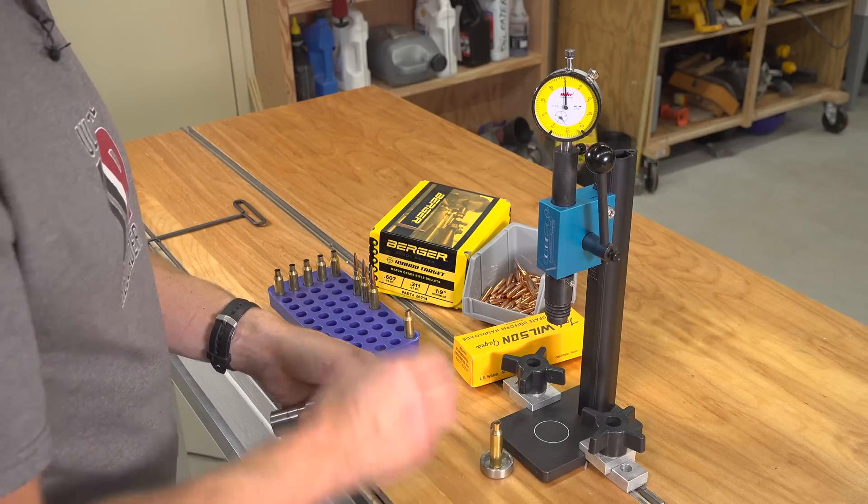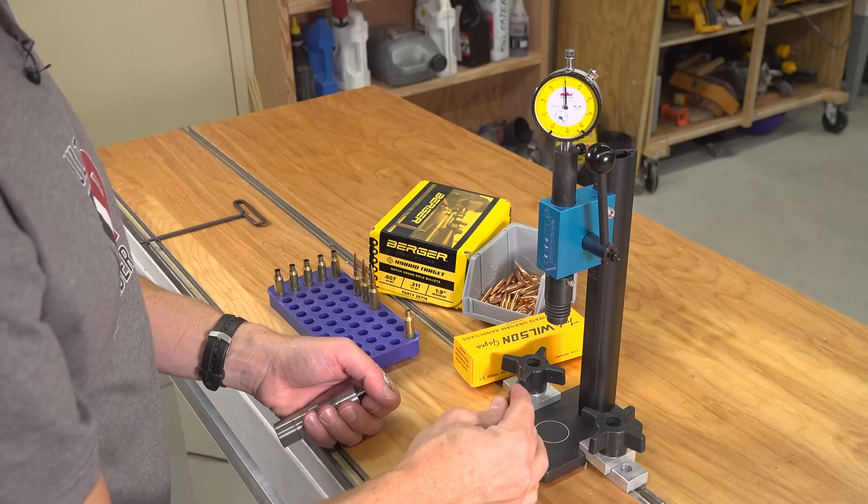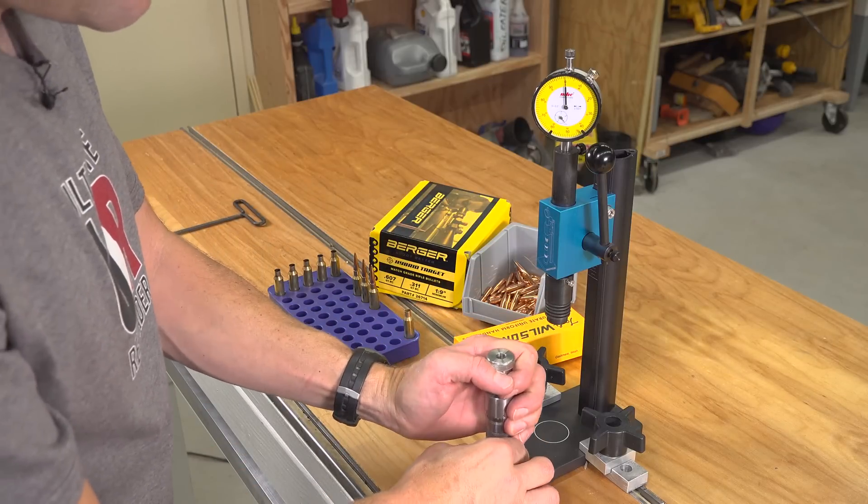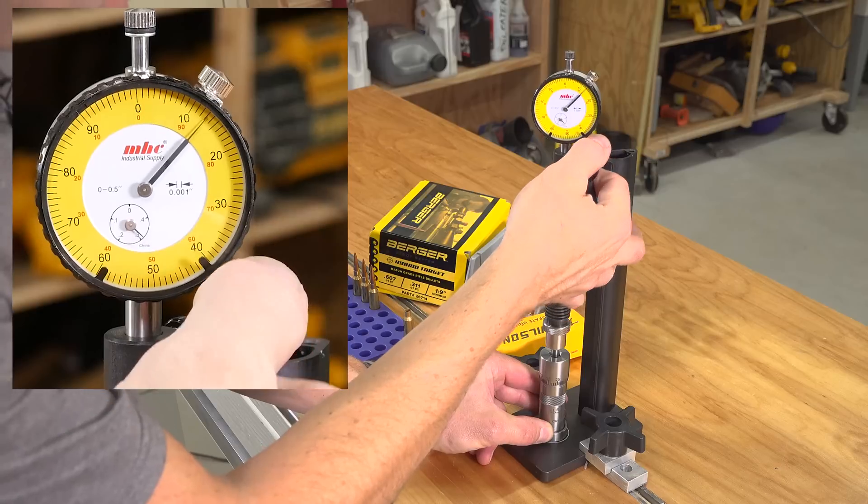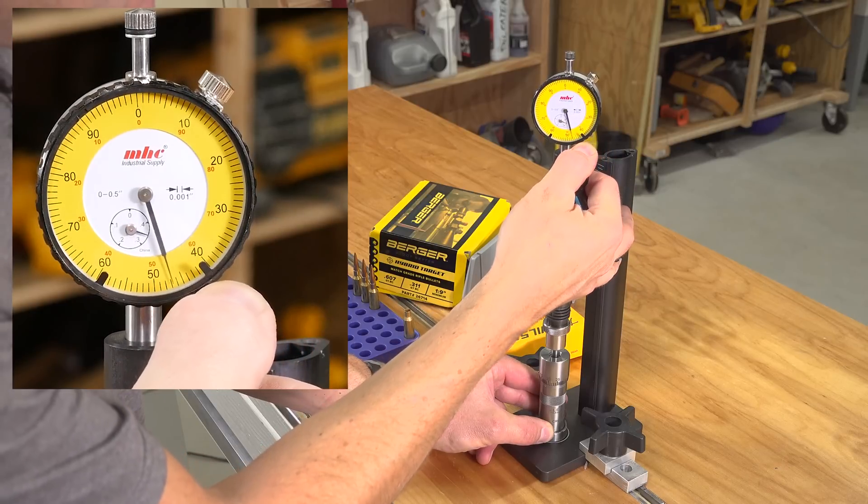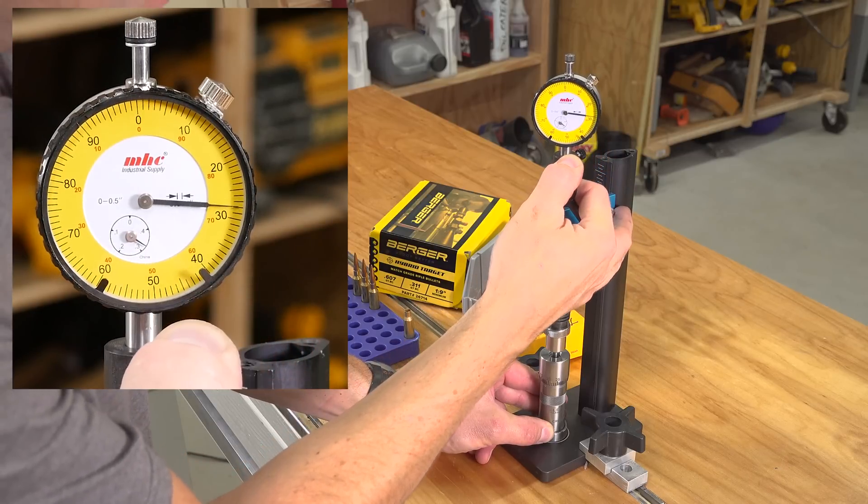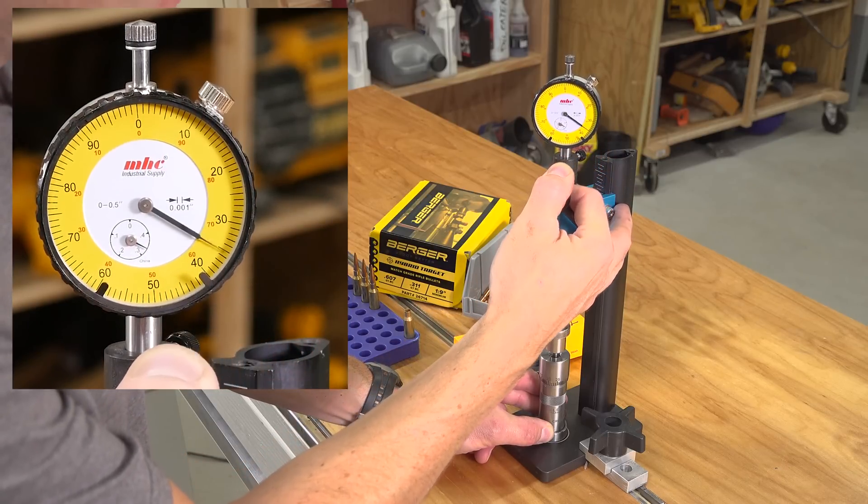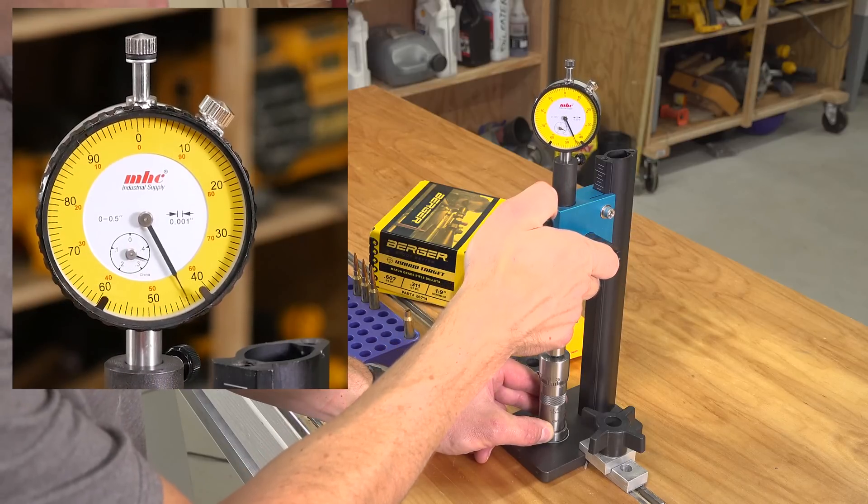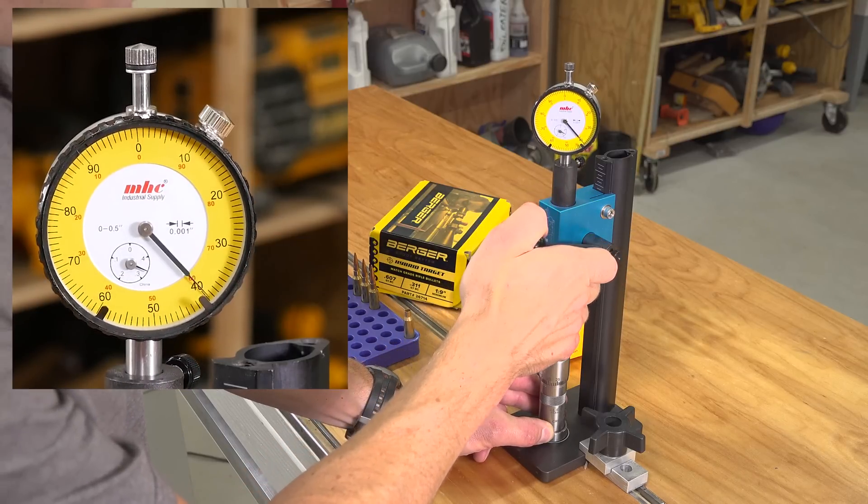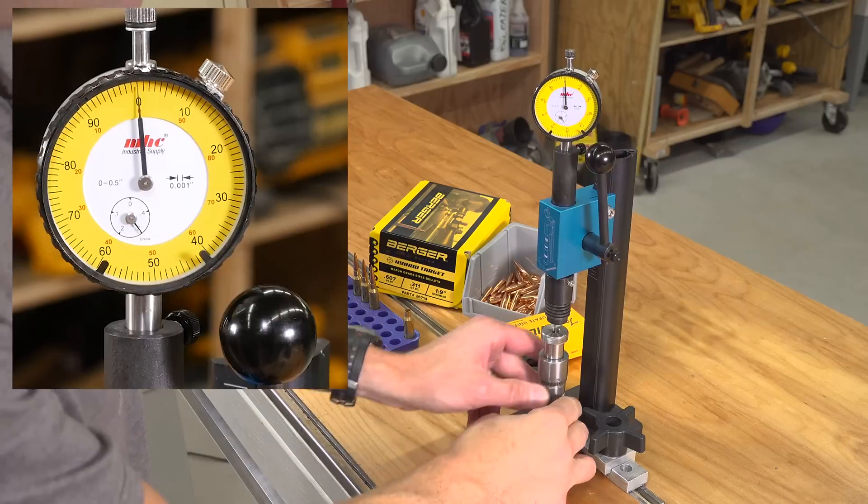Let's try that again. Another new piece of brass, another 140 hybrid. And breaking free at about 55 it looked like. Very similar result.